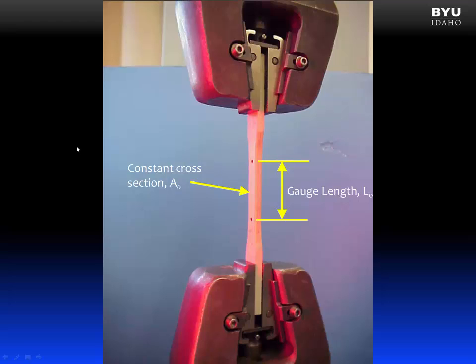Prior to testing, we will pick two points on the specimen, and the distance between those two points we will call our gauge length, and we are going to measure the change in that length during the test. Between those two points, the cross-section is kept constant, and we measure that cross-section before the test.